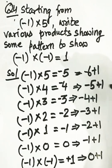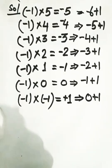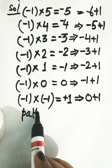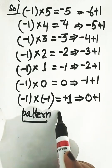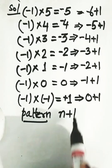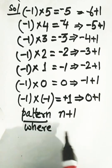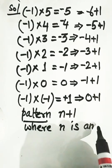If we add integer plus 1, then for n equals minus 5, it gives minus 4. So the pattern follows: n plus 1, where n is an integer.